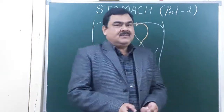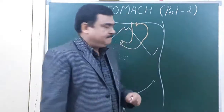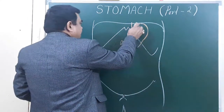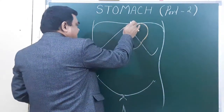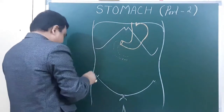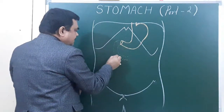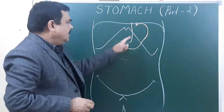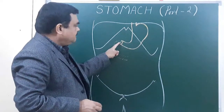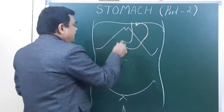Let's now discuss the second part of the stomach, that is the external features of the stomach. In this diagram you can see the position of the stomach. Here is the esophagus, this is the stomach, this is the diaphragm, and here is the duodenum. The stomach extends from the lower end of the esophagus to the first part of the duodenum.